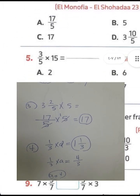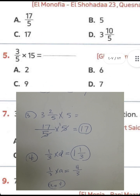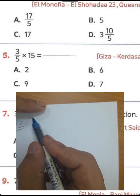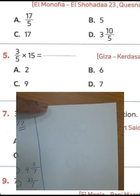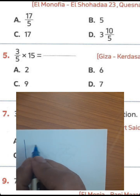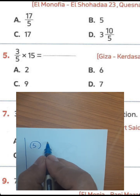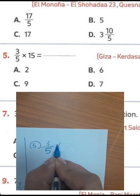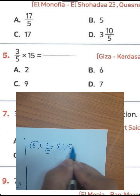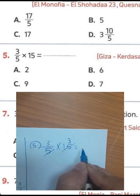Question number 5: we have 3 over 5 times 15. 15 divided by 5 equals 3, and 3 times 3 equals 9.